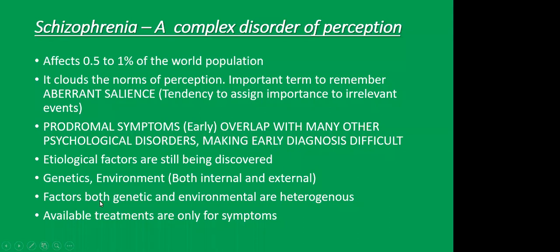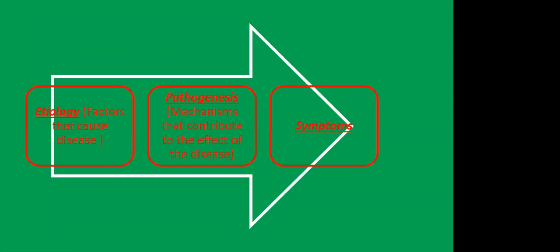The factors that contribute to the disease are very heterogeneous - many have been discovered and are still being discovered. Etiology is an umbrella term that signifies factors that cause disease. Once the disease is caused, it has an effect - for that we use the term 'pathogenesis.' So the sequence is: etiology first (cause), followed by pathogenesis (effect), and then finally symptoms.